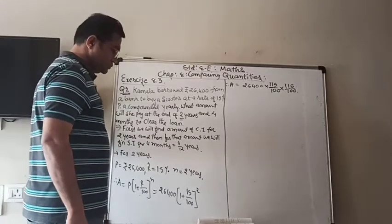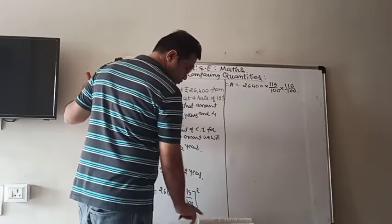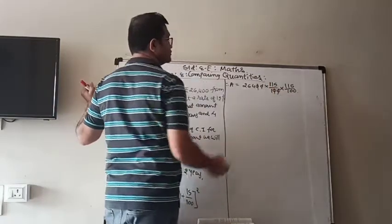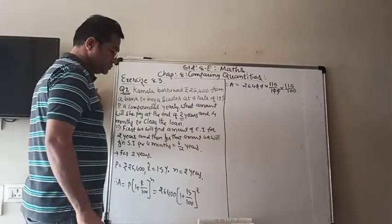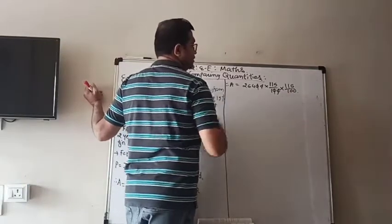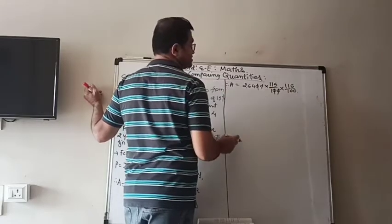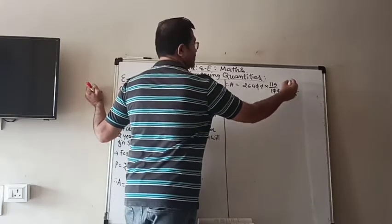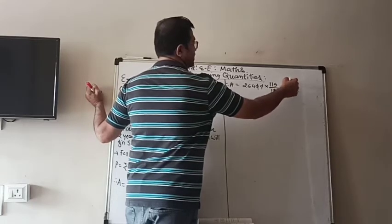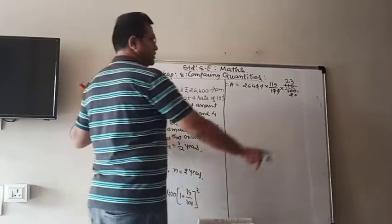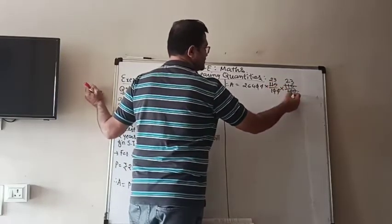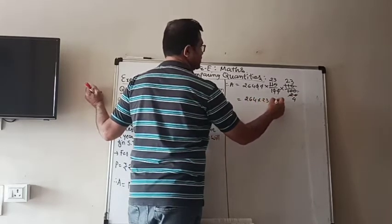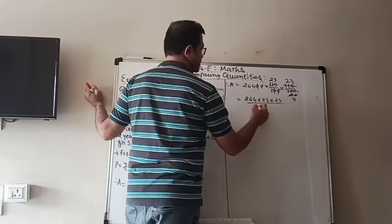That is equal to 26,400 × (1 + 15/100)^2. Doing the LCM, that becomes 26,400 × (115/100) × (115/100). After cancellations — 25 into 100 gives 4, and 5 into 115 gives 23 — we get 264 × 23 × 23 divided by 4.